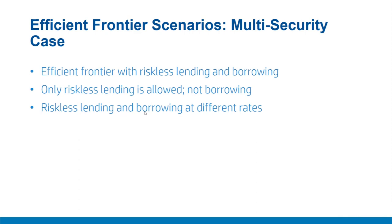Efficient Frontier Scenarios: Multi-Security Case 2. In this video, we'll discuss the shape of the efficient frontier with multi-securities and introducing a riskless or risk-free instrument. We'll discuss three cases: first, efficient frontier with risk-less lending and borrowing; then only risk-less lending allowed, not borrowing; and then risk-less lending and borrowing at different rates. We gradually move step-by-step towards a more realistic assumption of different risk-less lending and borrowing rates.